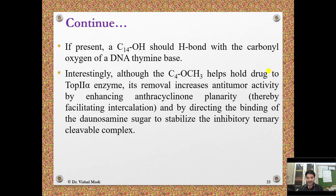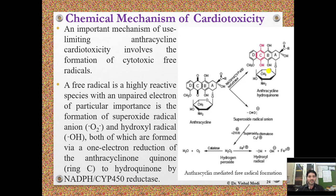Chemical mechanism of cardiotoxicity: An important mechanism of use-limiting anthracycline cardiotoxicity involves the formation of cytotoxic free radicals. A free radical is a highly reactive species with an unpaired electron. Of particular importance is the formation of superoxide radical anion and hydroxyl radical, both formed via a one-electron reduction of the anthracycline quinone ring C to hydroquinone by NADPH cytochrome P450 reductase enzyme.